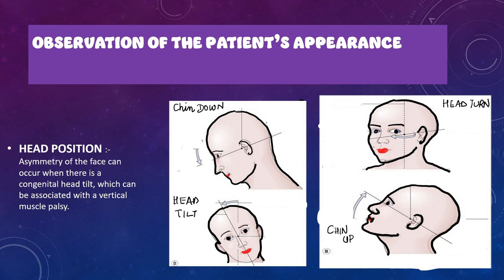When a patient comes into the clinic, certain clues tell you they have squint. Many times there will be obvious tropias — exodeviation, esodeviation, hyper or hypodeviation. But sometimes the eyes are orthotropic yet there are complaints; such patients can be identified by their appearance. The first thing to look for is the position of the head — also called abnormal head posture or abnormal head position. There are three types: chin up or chin down, face turn towards right or left, and head tilt towards right or left.